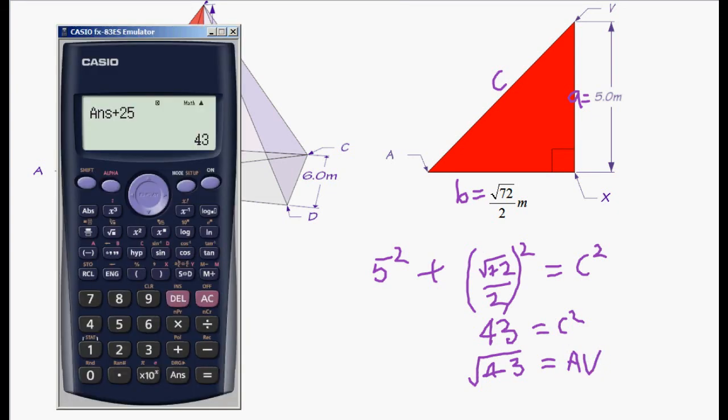If you did want to do the decimal value of that, we could just square root using our calculator and get the decimal value, 6.557, and so on. Two significant figures is what we've got in the question, so we should round to that. So that would give us 6.5 as our two significant figures.